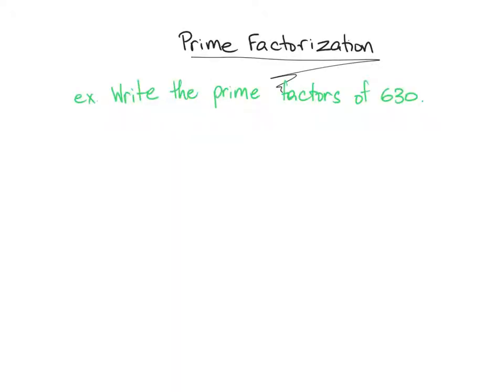Okay, so this looks like a pretty daunting task. We're asked to write the prime factorization of 630. So in order to do that, there are multiple ways, but I am a huge fan of the factor tree, so that's what I'm going to do with you guys.